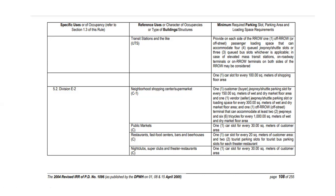You need to identify which division your project falls under and refer to the minimum required parking area accordingly. For public markets, that's one car slot for every 30 square meters of customer area. For restaurants, one car slot for every 20 square meters of customer area, plus two tourist bus parking slots per theater-restaurant. For nightclubs, one car slot for every 30 square meters of customer area.